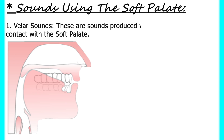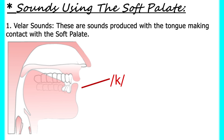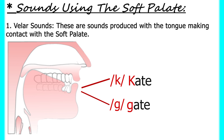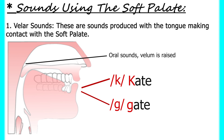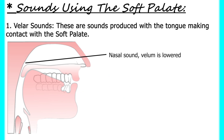Sounds produced with the tongue making contact with the soft palate are called velar sounds. We have such sounds as K in 'kates' and G in 'gates.' You feel the strain inside the mouth at the back of the tongue because the velum is raised when producing oral sounds like K and G. But when producing nasal sounds, the velum is lowered so that air passes through the nasal cavity, as in M and 'sing.'